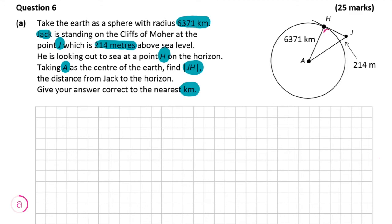So given that we can say that AH is obviously 6,371km and AJ is also that because we've got the radius included in that length as well plus 214m and that means that AJ is equal to 6,371.214km obviously where the .214 is coming from those additional meters.